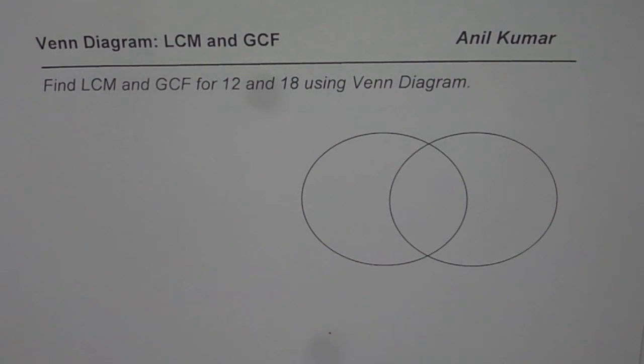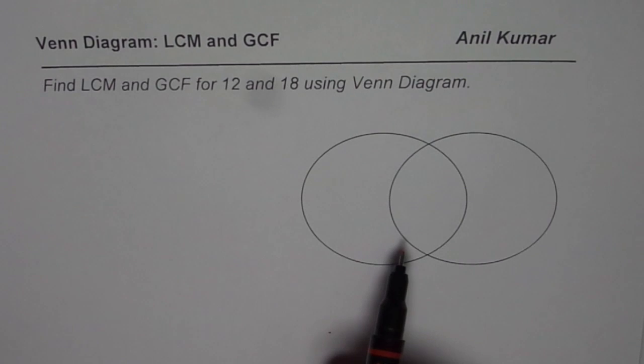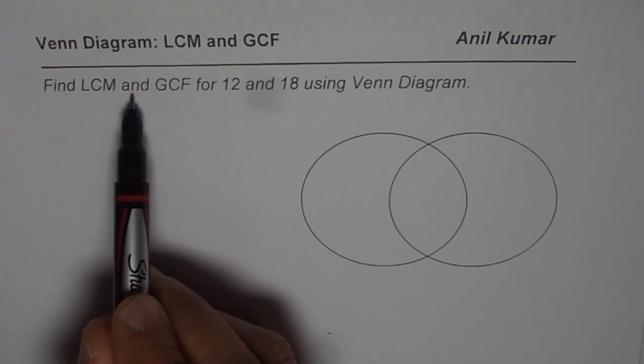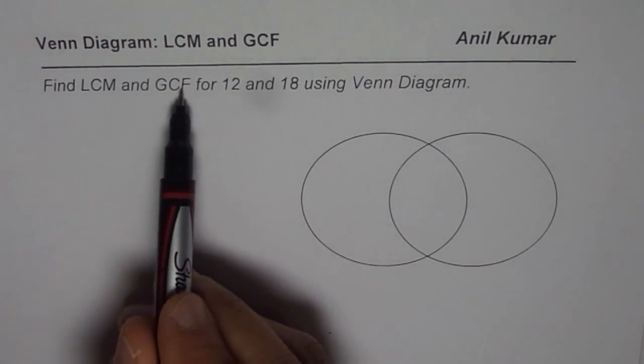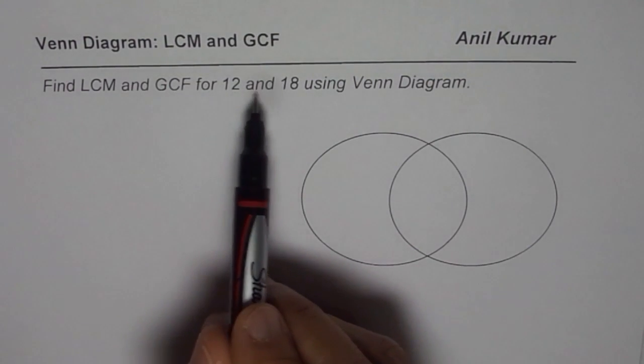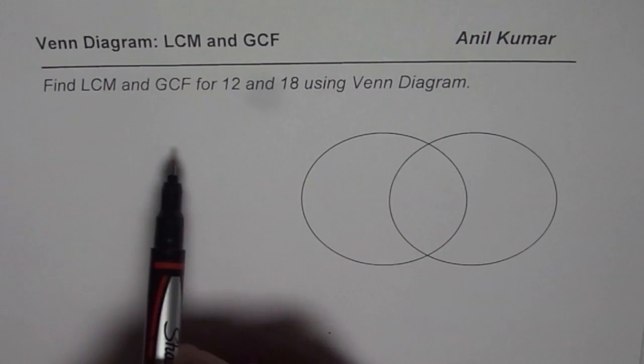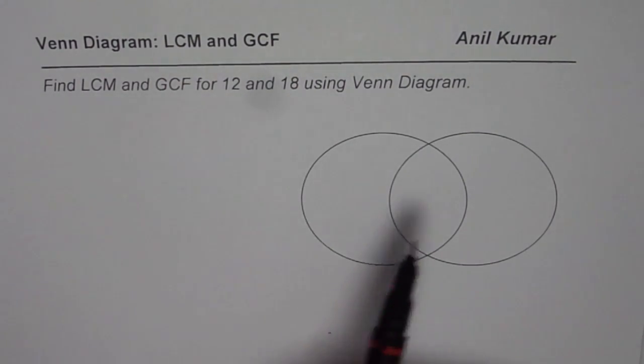You have learned many techniques to find LCM and this is also one of the very popular techniques which we are going to learn. The question here is find LCM, the lowest common multiple, and the greatest common factor GCF for 12 and 18 using Venn Diagrams. So we will combine two techniques to find the solution.